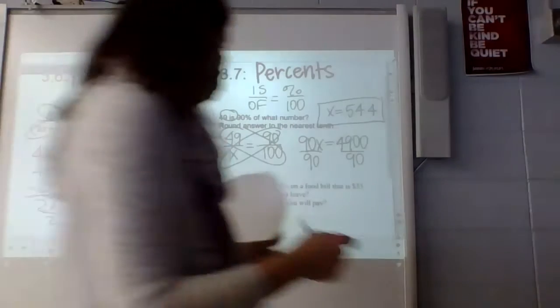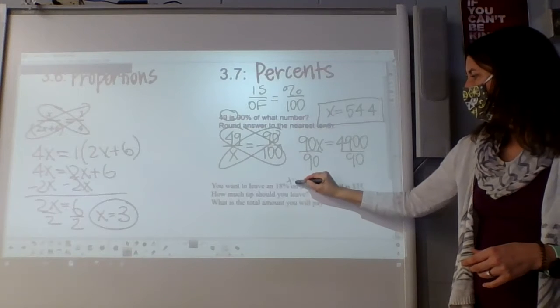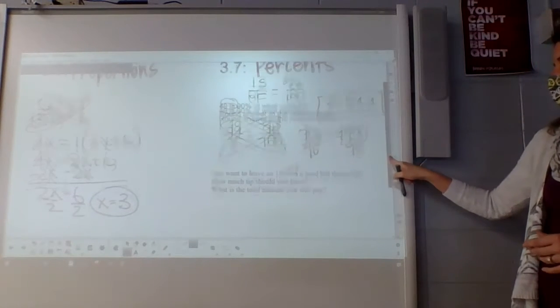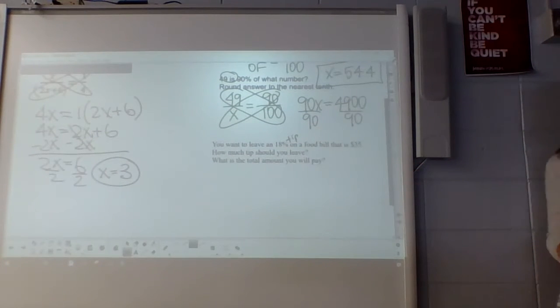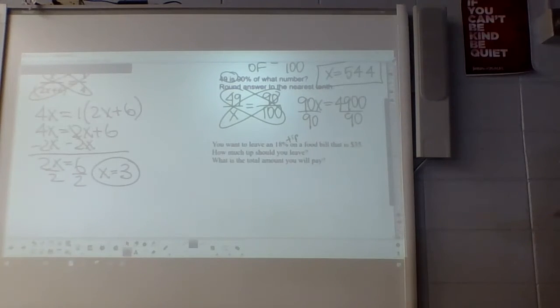It says you want to leave an 18% tip on a food bill that is $35. How much tip should you leave, and then what would be the total amount you pay? So 18% is kind of that standard rate that if you go with a big group of friends to a restaurant, which again we don't get to do that, but a big group of friends to a restaurant, they might just put an 18% tip on your bill.